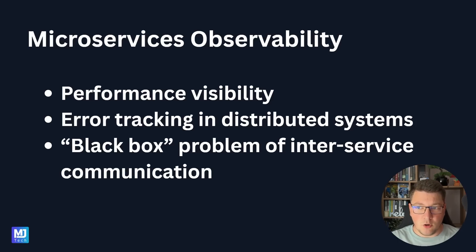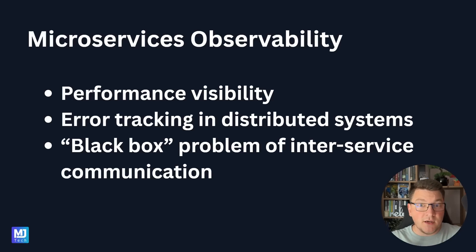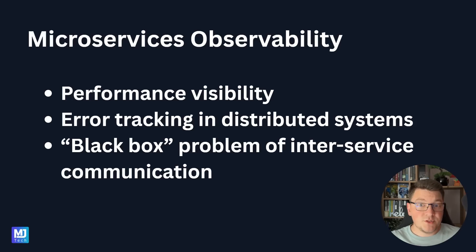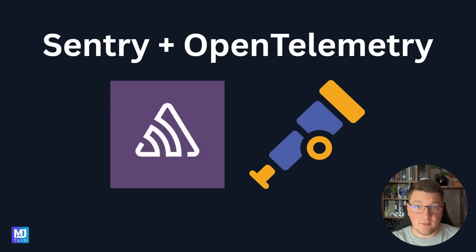Lastly, there's the so-called black box problem of inter-service communication. The problem here is you can't really be certain what's causing the failure. Is it a database that's crashed in the other microservice that we are calling, or is this microservice reaching out to another service we aren't aware of, which is currently down? This type of problem is surprisingly difficult to pinpoint with just plain old logging, but when we introduce distributed tracing into our system, we suddenly gain a lot more visibility.